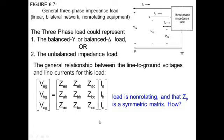The phase voltage matrix consists of VAG (the voltage between A and ground), VBG (the voltage between B and ground), and the voltage between C and ground. The impedance matrix ZB is a matrix that has the self-impedances ZAA, ZBB, ZCC, and the mutual impedances ZAB between A and B, ZAC between A and C, and ZBC between B and C.